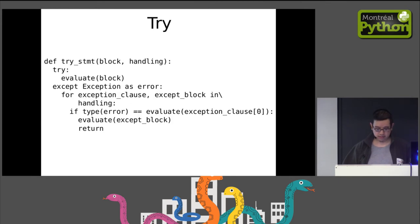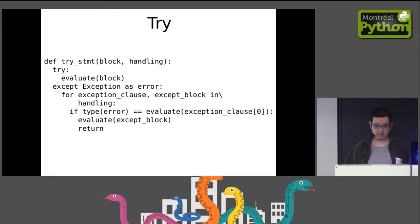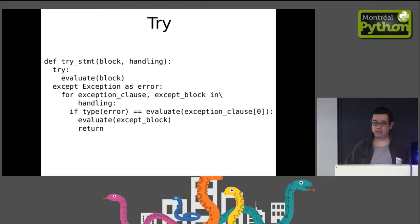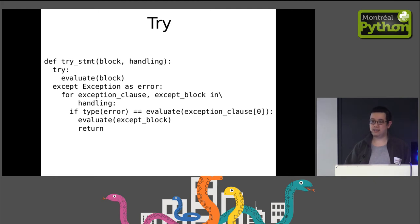The try_statement has a block and a list of exception clauses. It evaluates the block, and if an exception is caught, it puts it in a variable called error and checks against each clause. If a matching clause is found, it evaluates that exception block and returns; otherwise it keeps going.